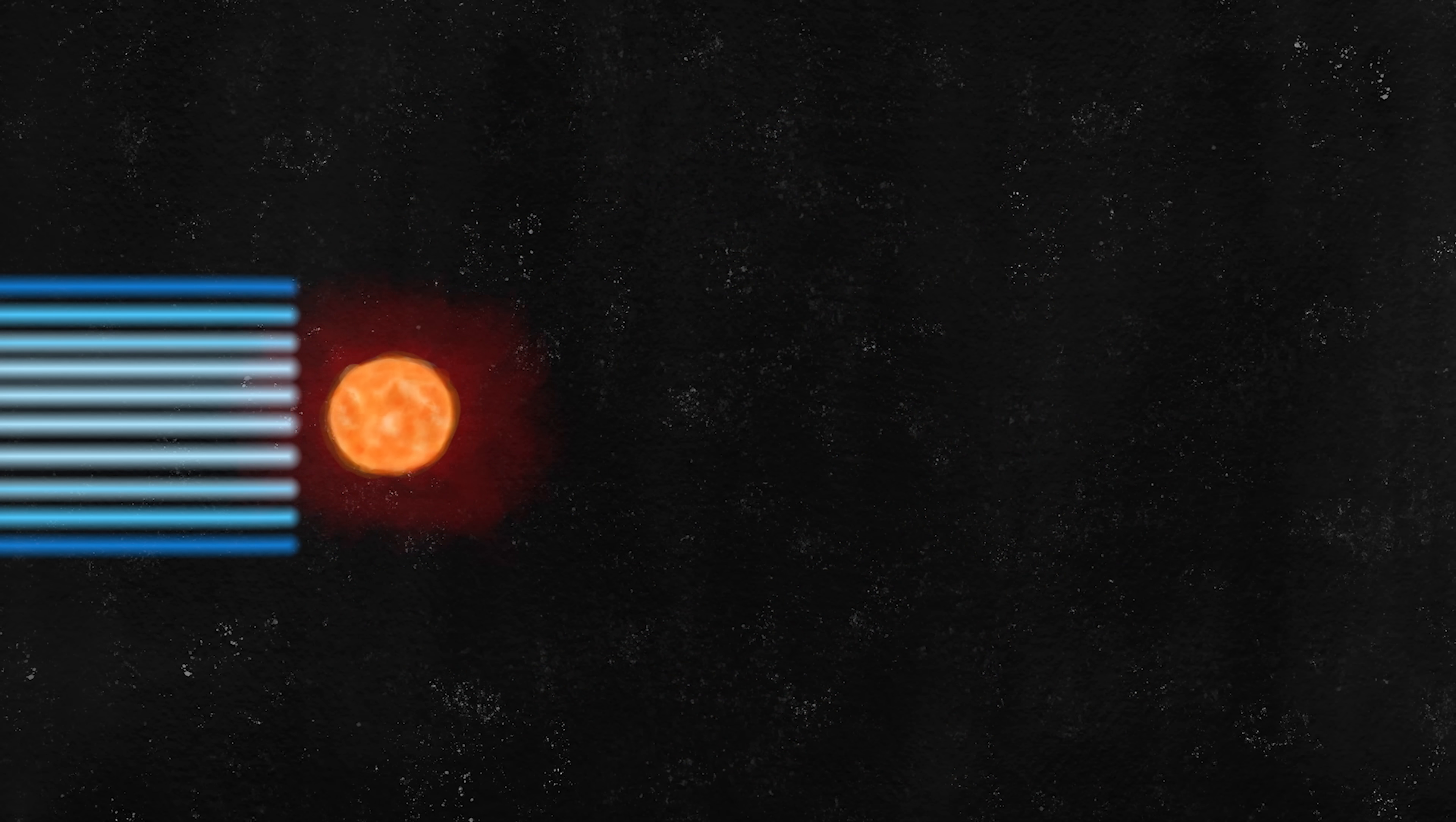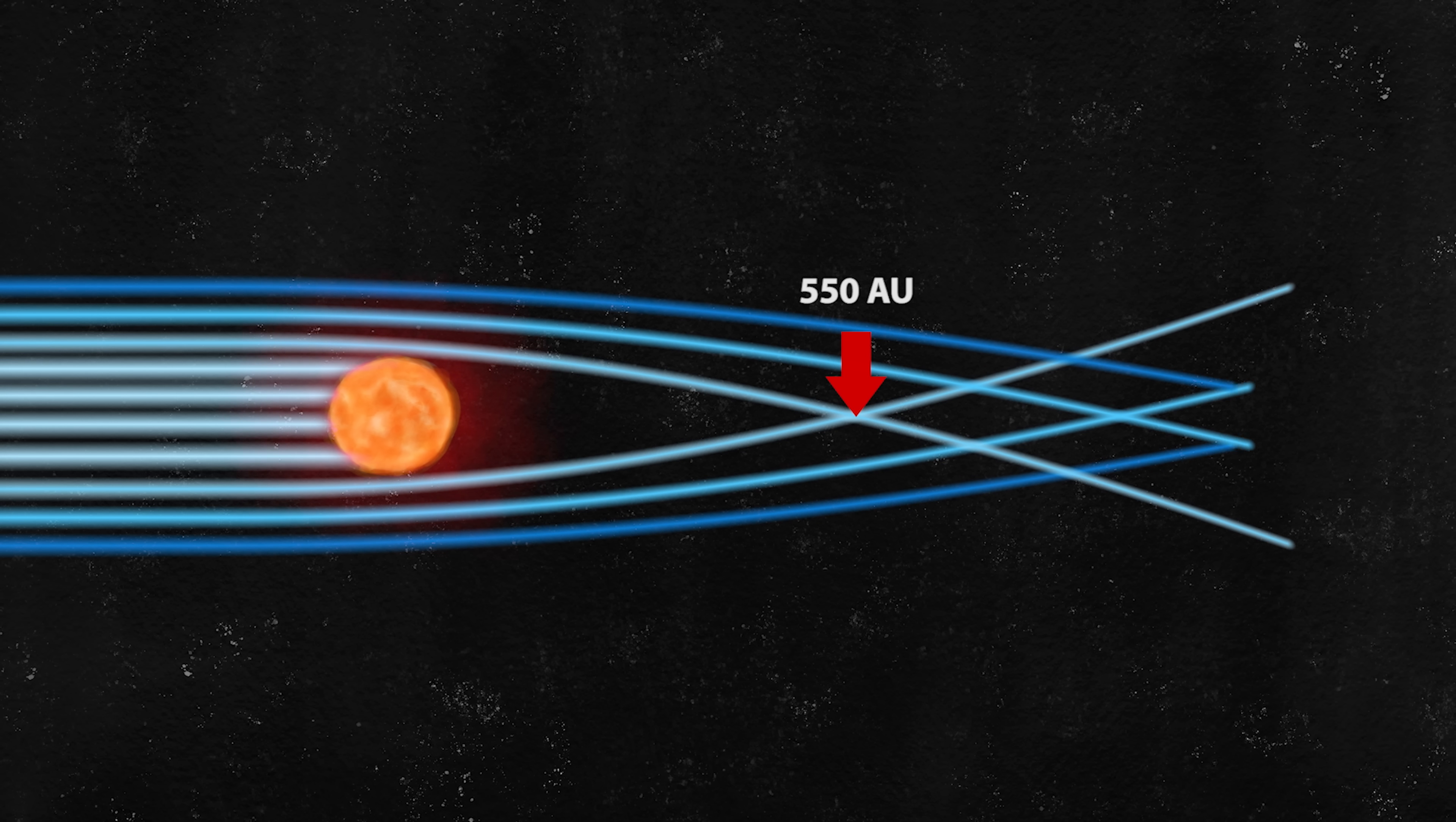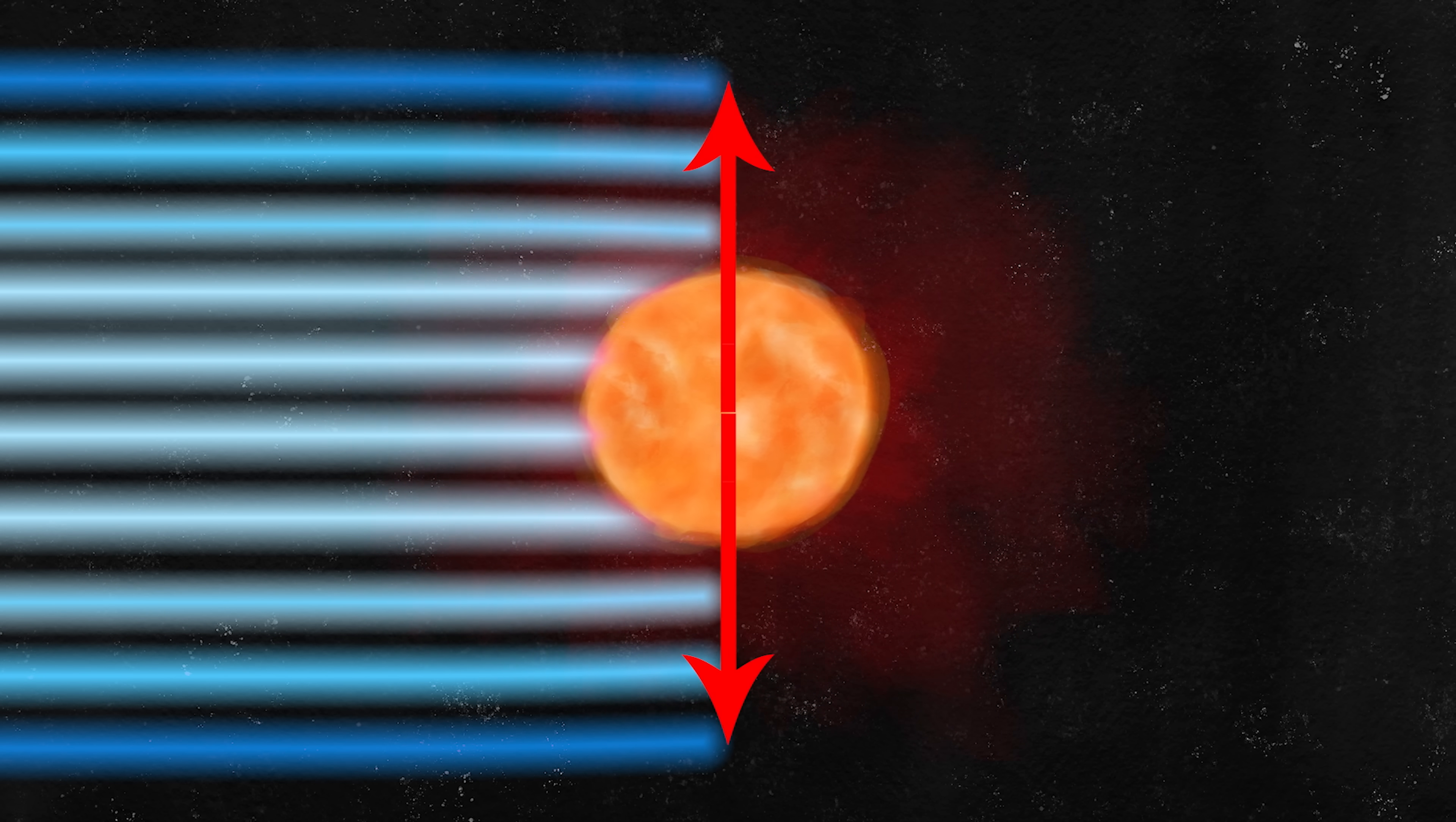When incoming light from a hypothetical exoplanet approaches the sun, its path is also warped. These curved light rays are brought into focus starting from about 550 astronomical units away from the sun. The effect of gravity on the deflection of light is inversely proportional to its distance from the center of the sun.